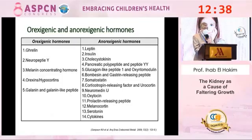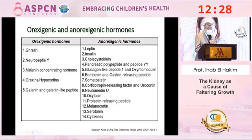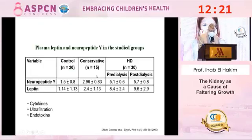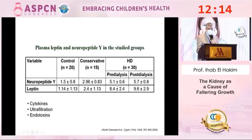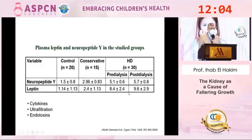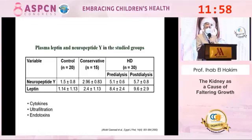Orexigenic and anorexigenic hormones also affect appetite, with changes occurring due to CKD or dialysis. Orexigenic hormones include ghrelin and neuropeptide Y; anorexigenic hormones include leptin and insulin. In our unit, we studied neuropeptide Y and leptin in both conservative CKD patients and hemodialysis patients pre- and post-dialysis. We found elevated levels of both — although they have contradictory actions — both are high in CKD patients and both increase after the hemodialysis session, with their cumulative effect influencing appetite.